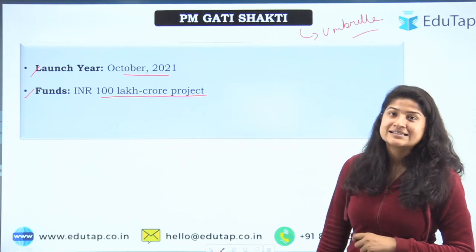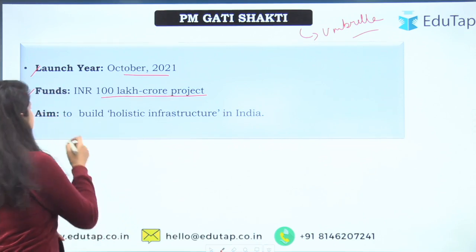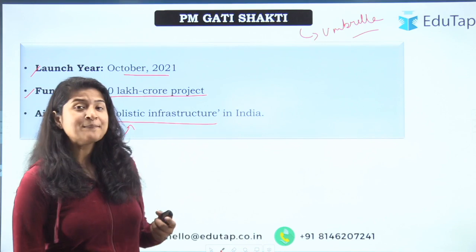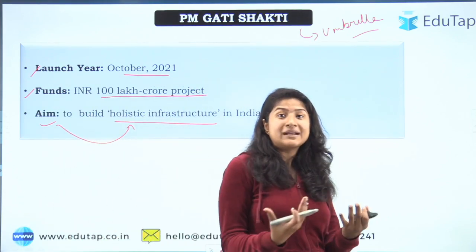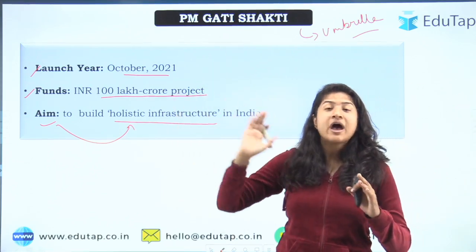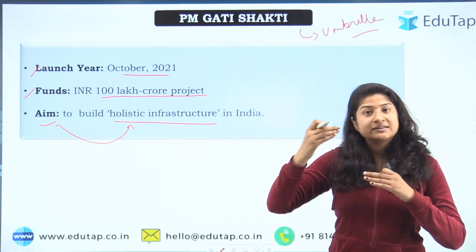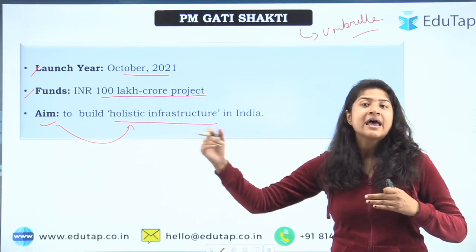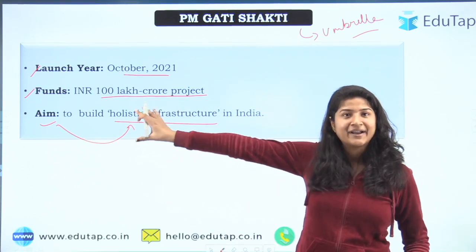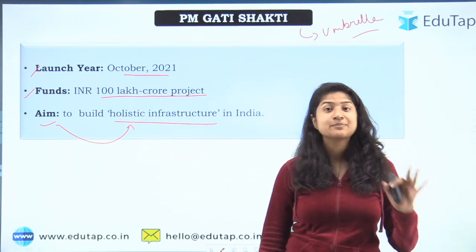The aim of this scheme is to build holistic infrastructure in India. Holistic here means overall, complete, sustainable development. The aim is to have proper coordination between different departments so that there is step-by-step progress, leading to better economic development in India. These are the basic one-liners that are directly asked in your examination, especially in Phase 1.